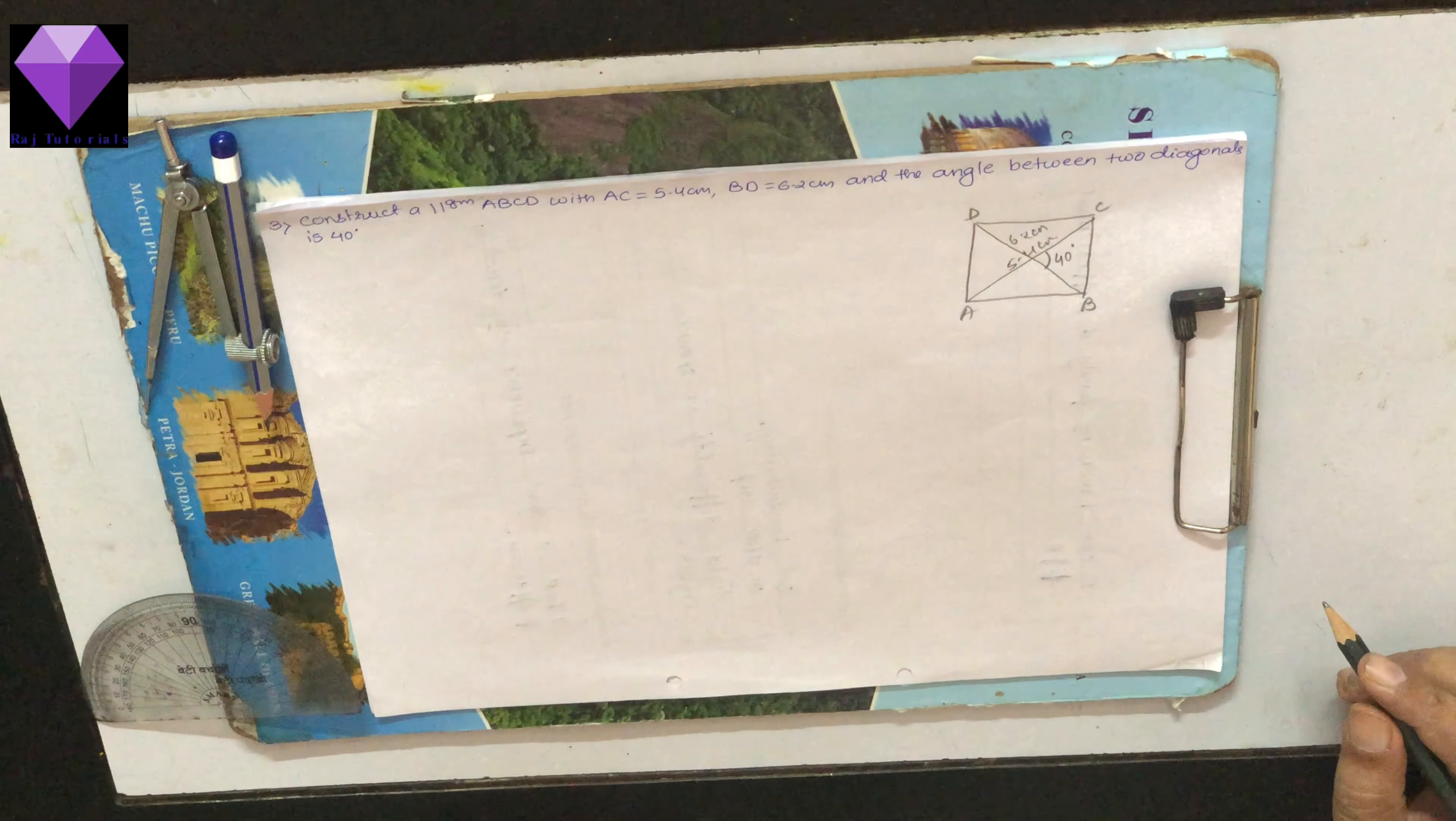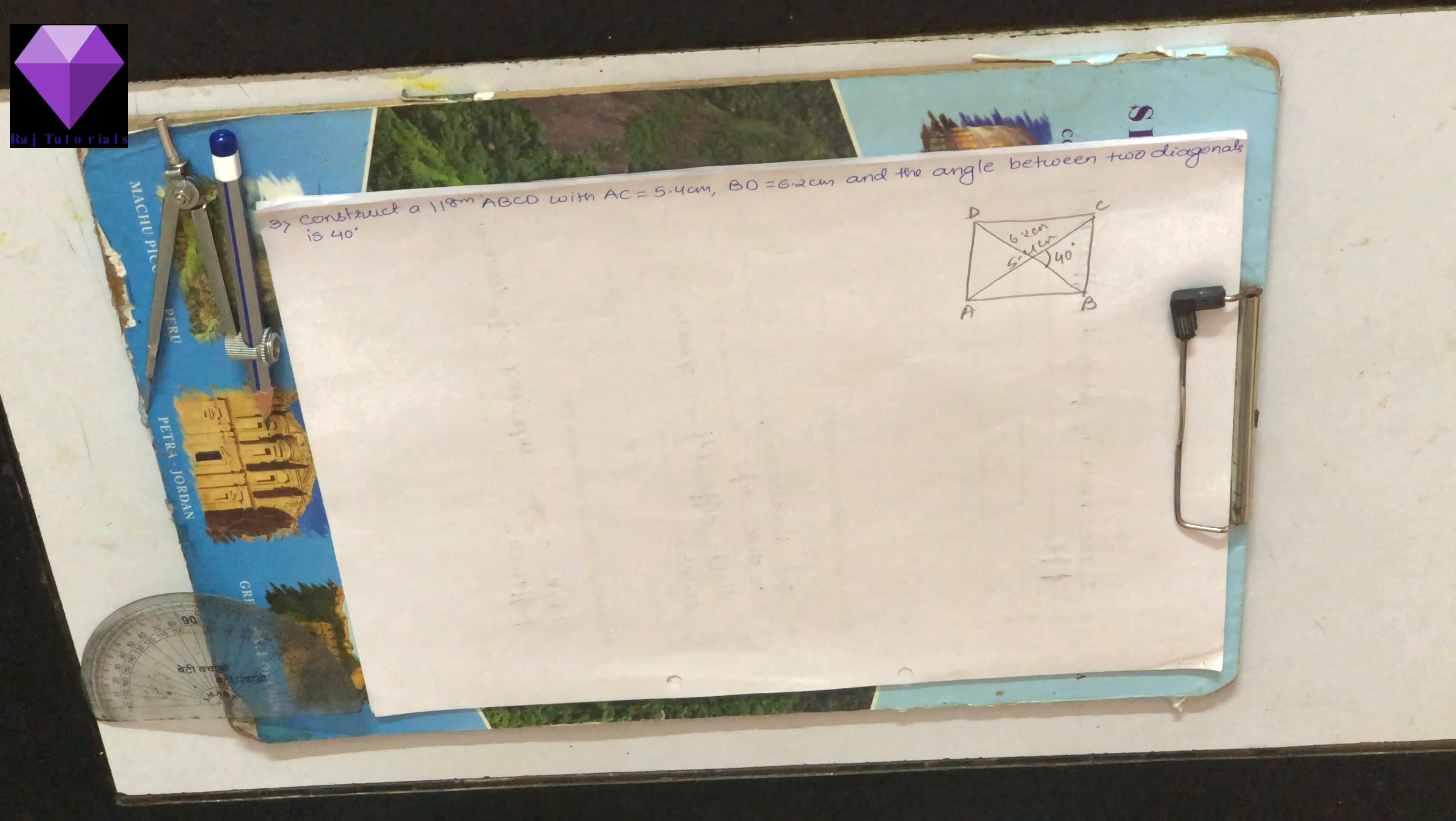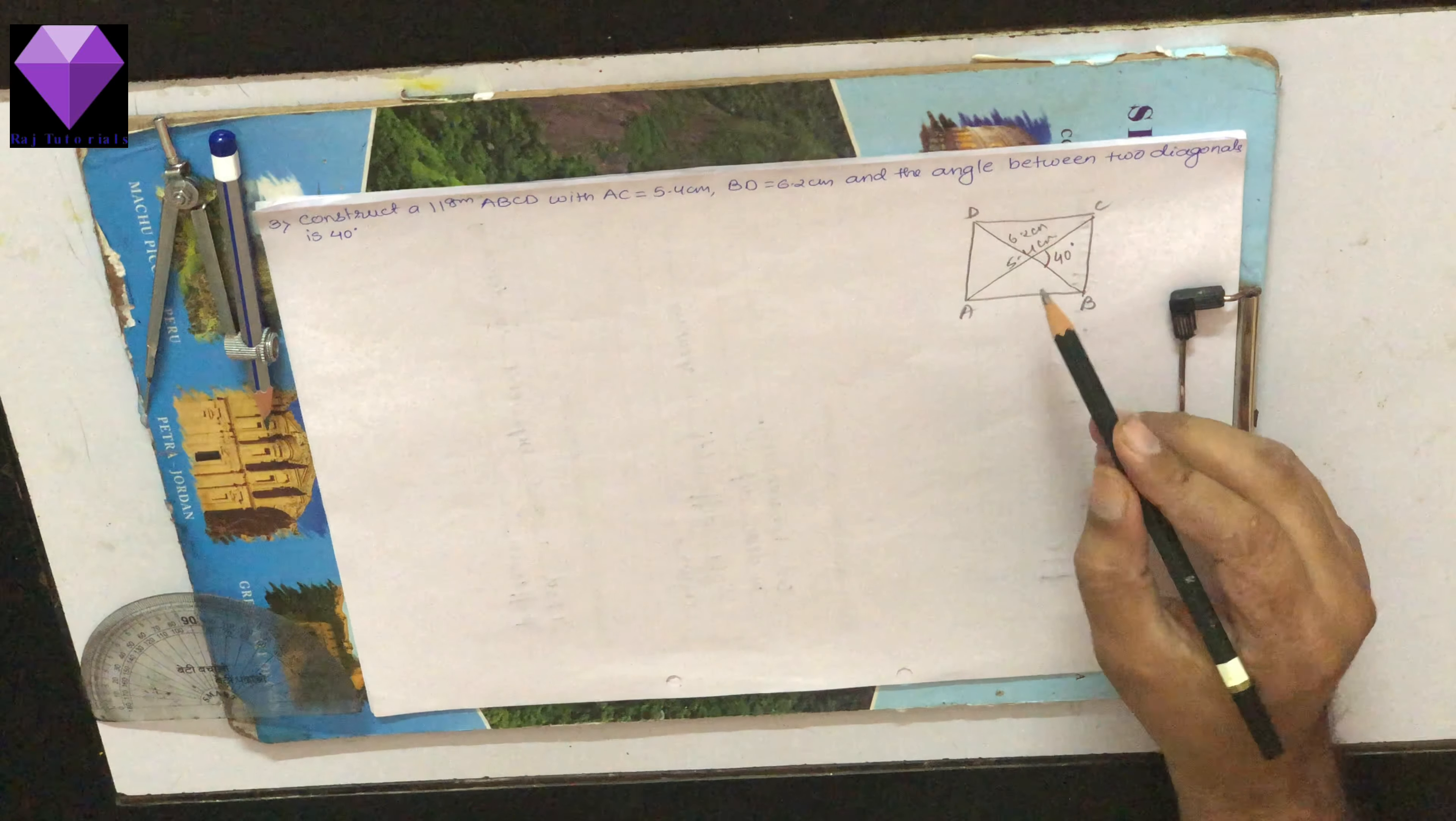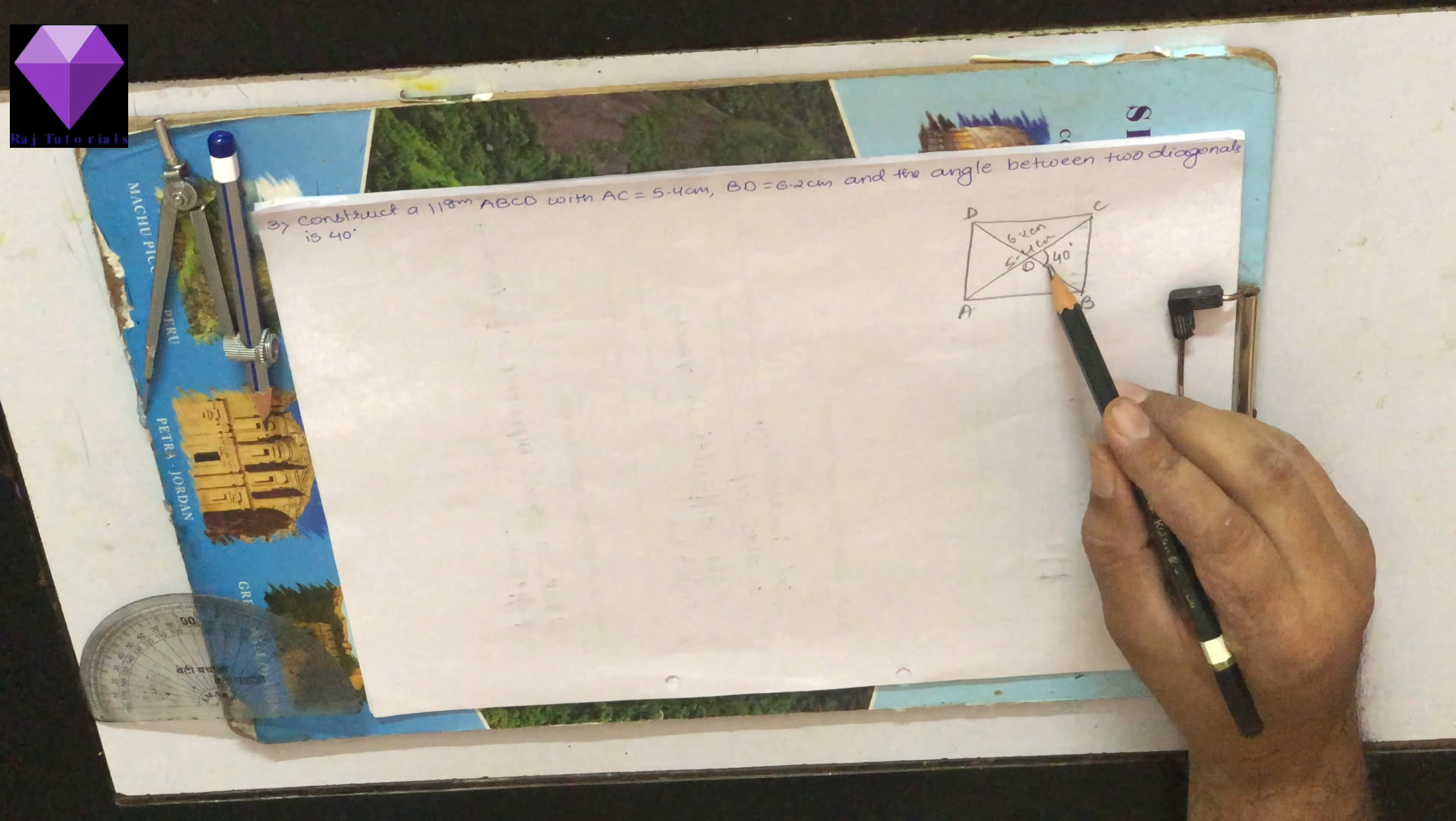Hello students, now we are going to construct a parallelogram ABCD where both the diagonals are given and the angle between the diagonals is given to me as 40 degrees.